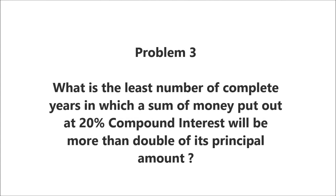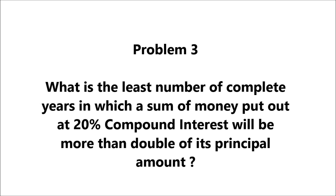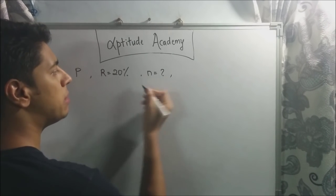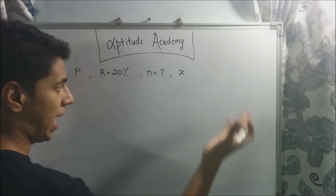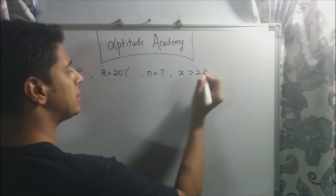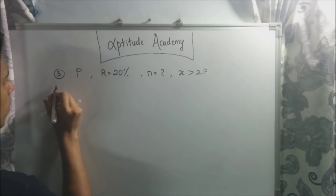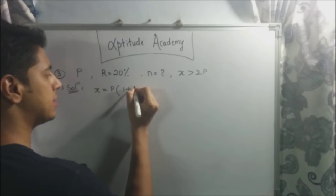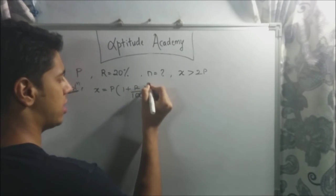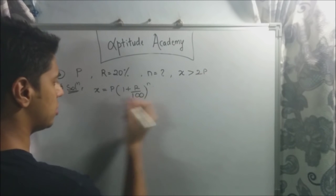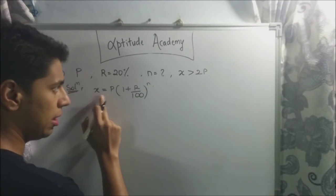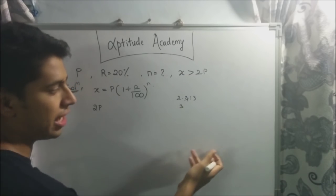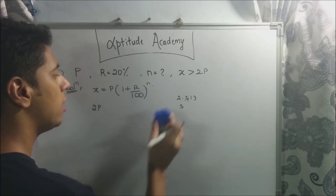Problem 3: What is the least number of complete years in which a sum of money put out at 20% compound interest will be more than double its principal? We need to find the minimum number of years such that the final amount exceeds twice the principal, with the rate fixed at 20%.